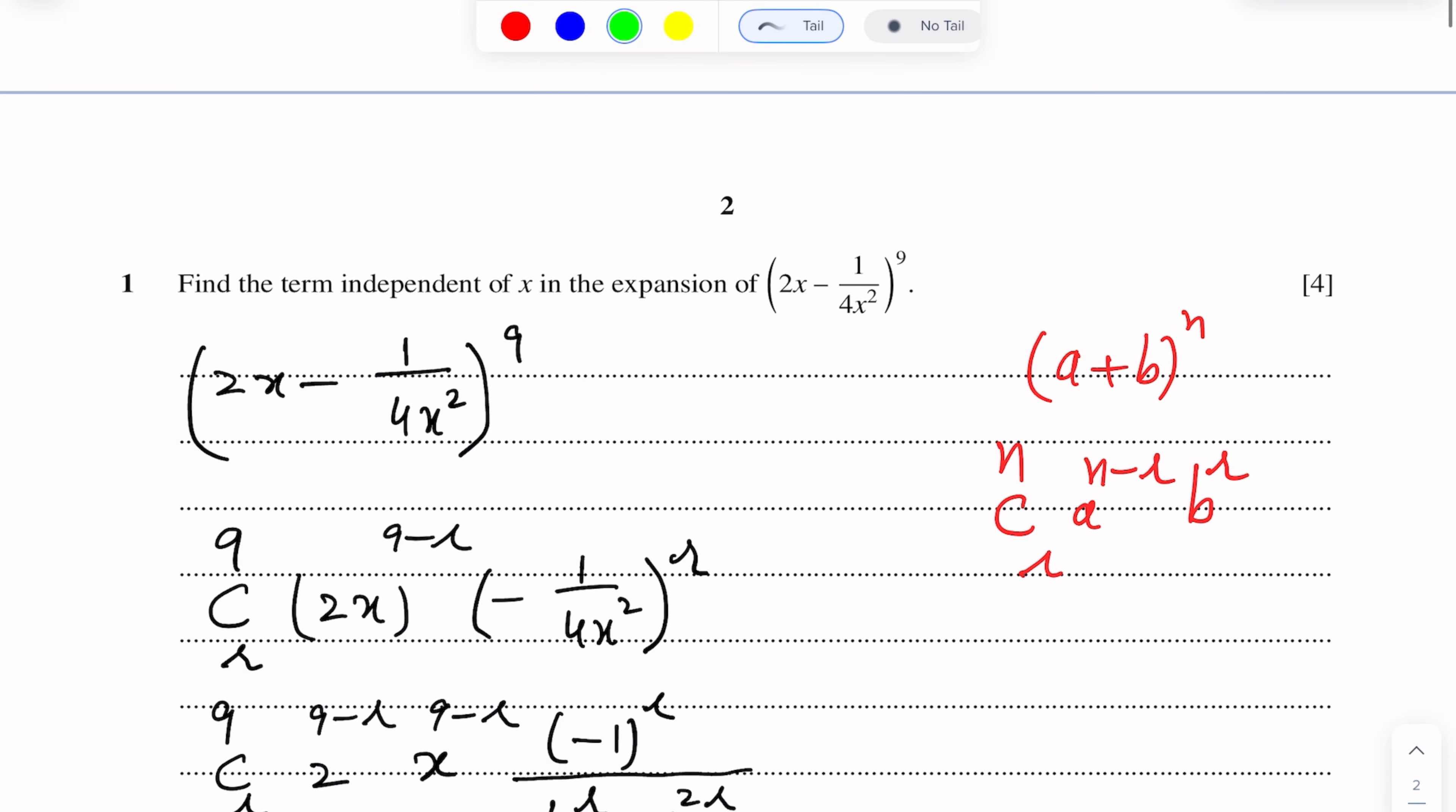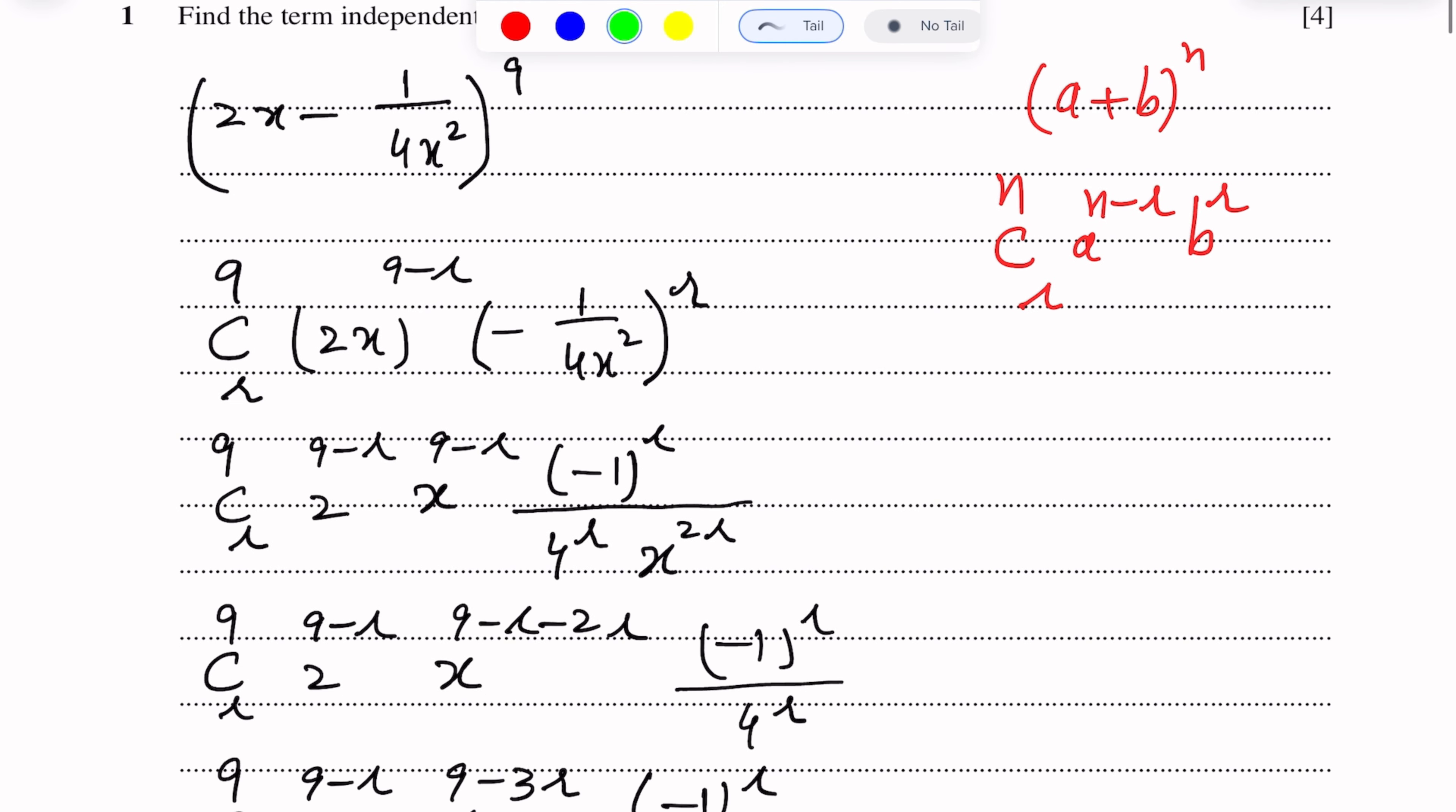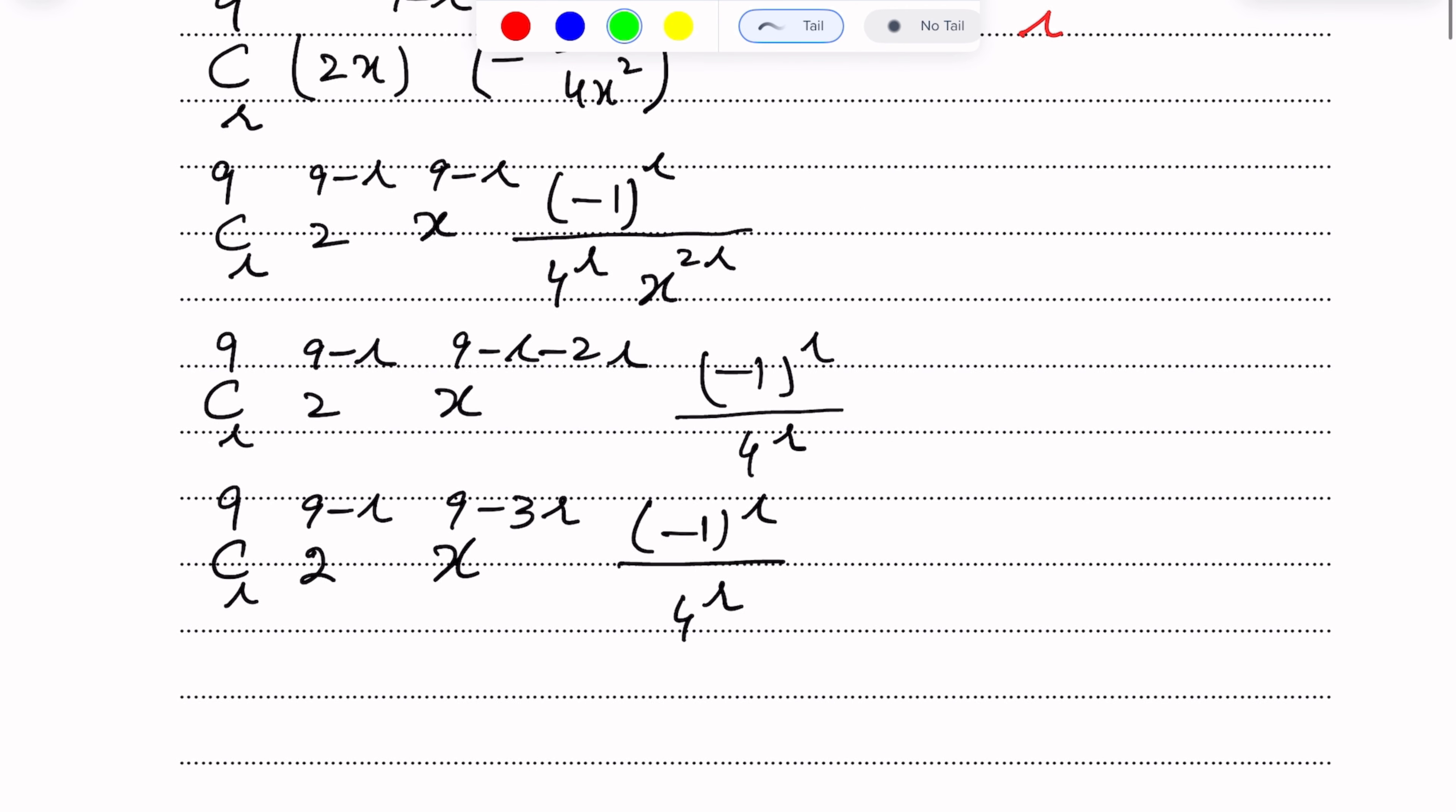Now we need to find the term independent of x, where x is not present. How to finish x? When x^0, because x^0 equals 1. So we focus on the x power: 9 - 3r = 0. From here, 3r = 9, so r = 3.